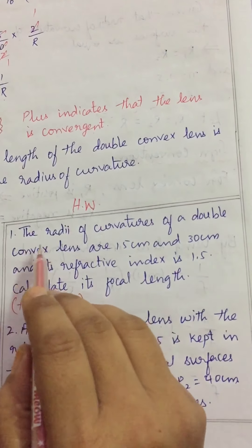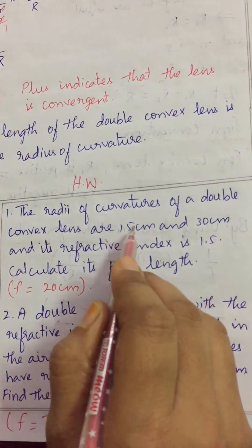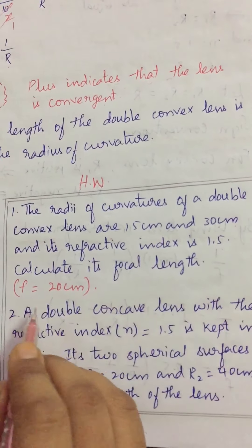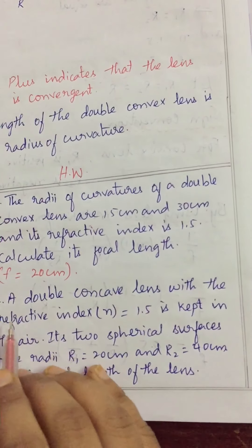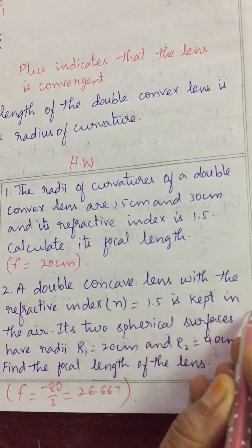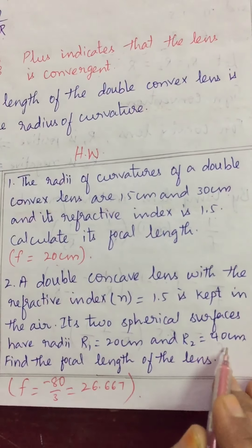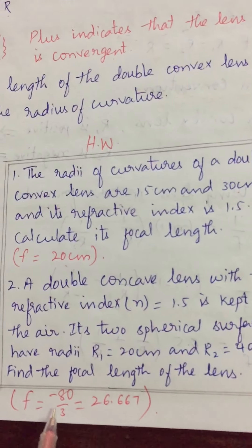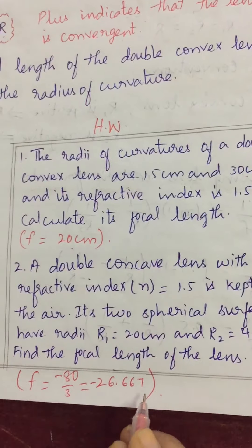Today's homework: First, the radii of curvature of a double convex lens are 15 cm and 30 cm, and its refractive index is 1.5 — calculate its focal length. You should get 20 cm. Second, a double concave lens with refractive index 1.5 has spherical surfaces with radii R1 = 20 cm and R2 = 40 cm — find its focal length. The answer is -80/3 cm, or approximately -26.667 cm.